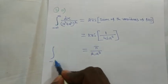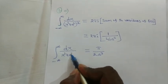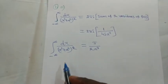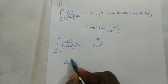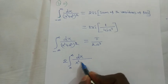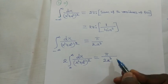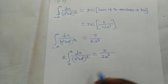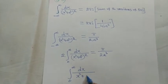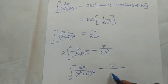Consequently, the integral from 0 to infinity of dx/(x² + a²)² equals π/(2a³), since the integrand is an even function and the integral from −∞ to +∞ is twice the integral from 0 to ∞.